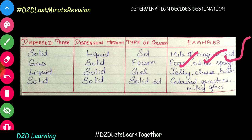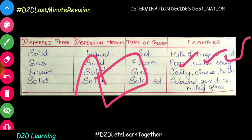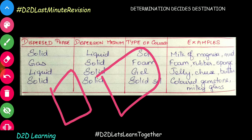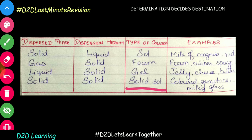Examples of gel: jelly, cheese, butter. So if you are asked — jelly, cheese, butter — what colloidal solution is it? We call it a gel. Gel is liquid dispersed in solid.